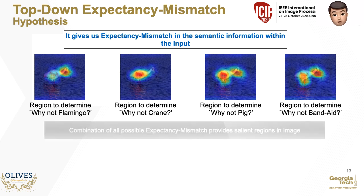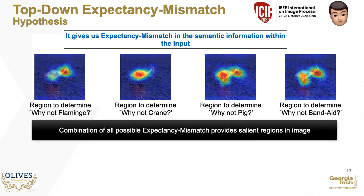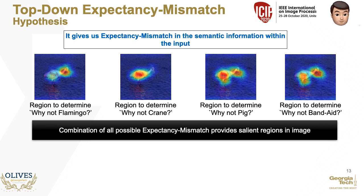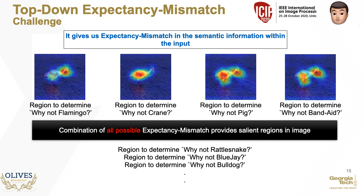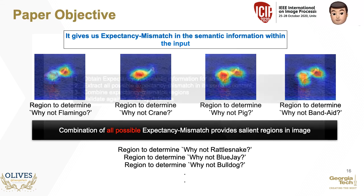This leads us to our hypothesis: the combination of all expectancy mismatch regions is the salient region in the image. For the bottom-up approach, saliency is a processed expectancy mismatch map. It stands to reason that for all possible top-down-based expectancy mismatch maps, their combination is saliency. Note that this leads to a challenge — all possible maps. The number of mismatches can be infinite: why not a snake, why not a bird, why not a dog, and so on. This also raises the question of who sets the original expectancy for a mismatch to occur.